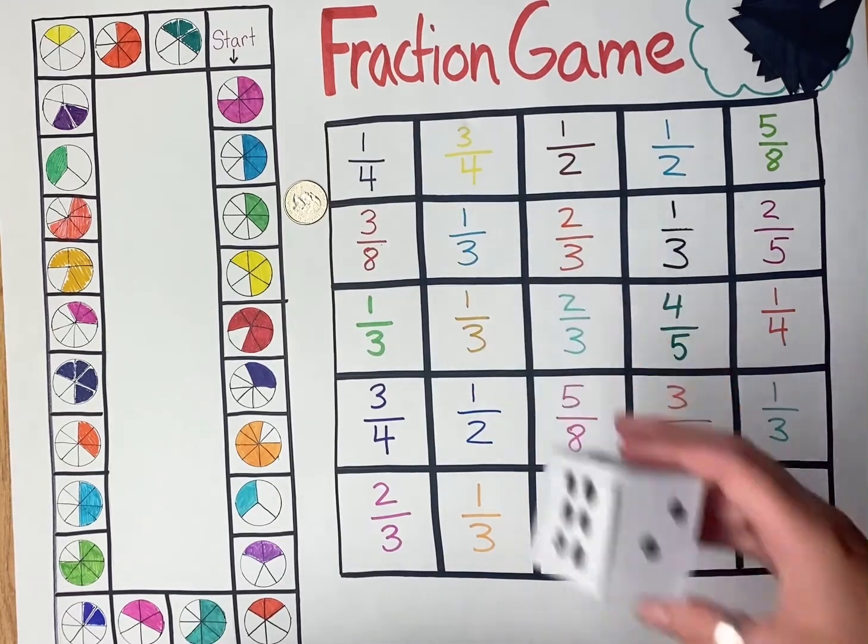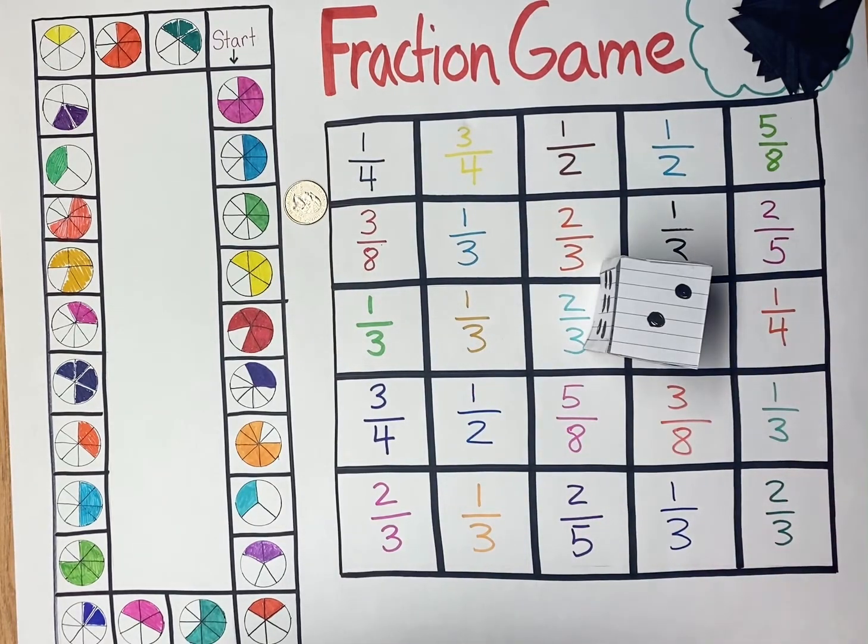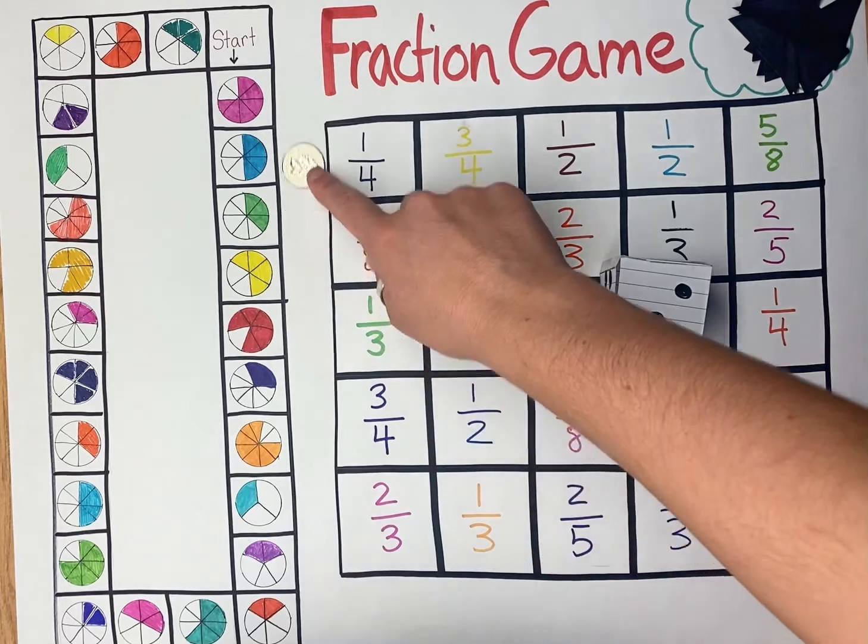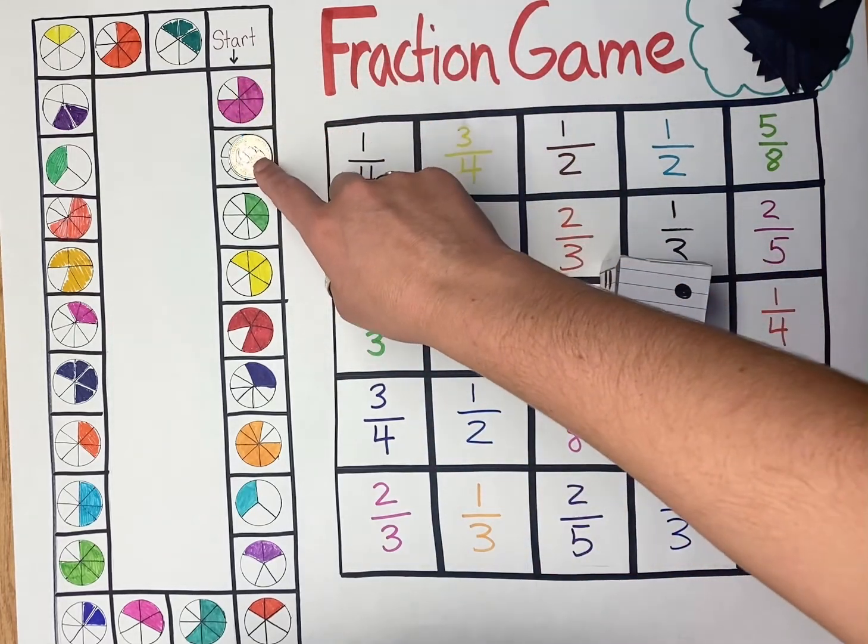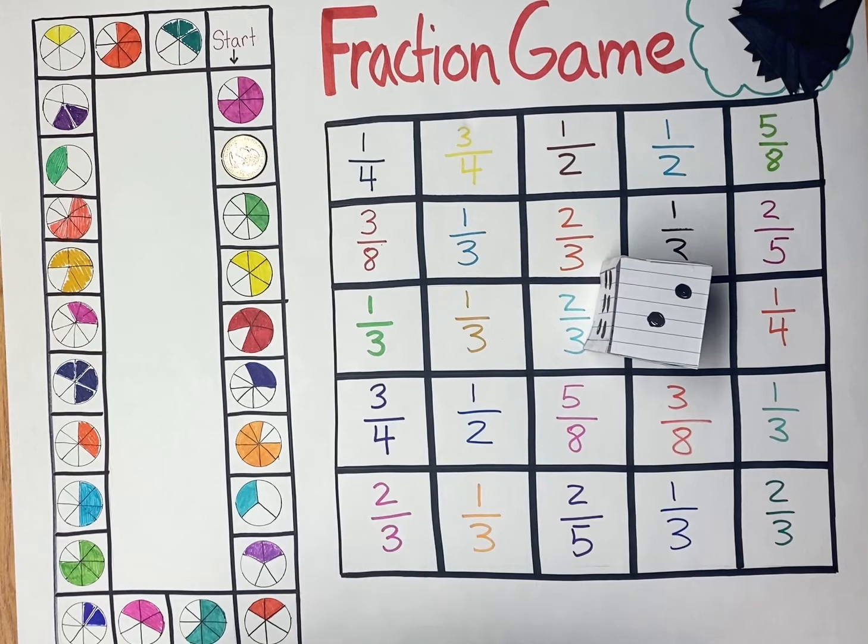The students will roll the dice. They will then take their game piece and move that many spots. Once they land on the spot, the students will look at the picture.